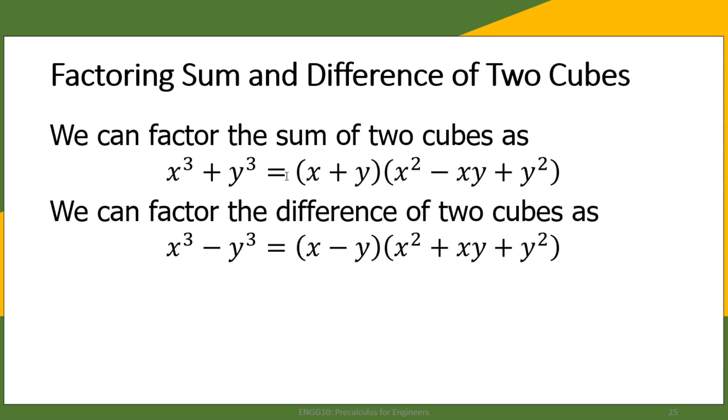This is a sum of two cubes, is equal to (x + y) multiplied by (x² - xy + y²). On the other hand, the factors of the difference of two cubes x³ - y³ is (x - y)(x² + xy + y²).